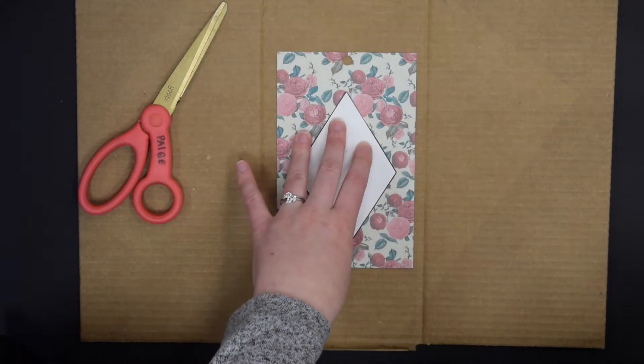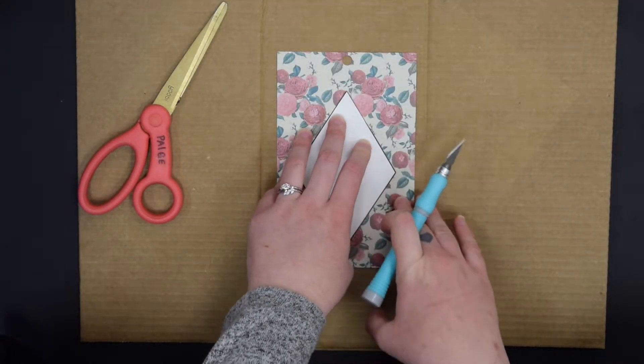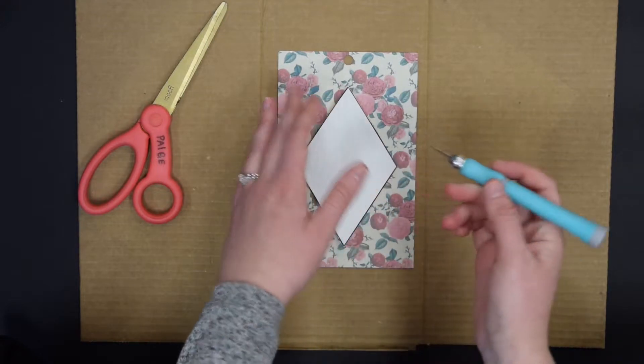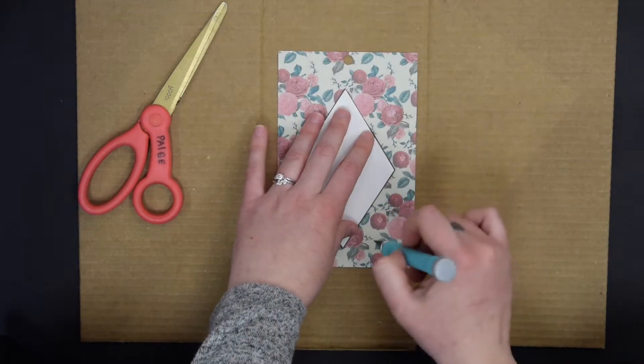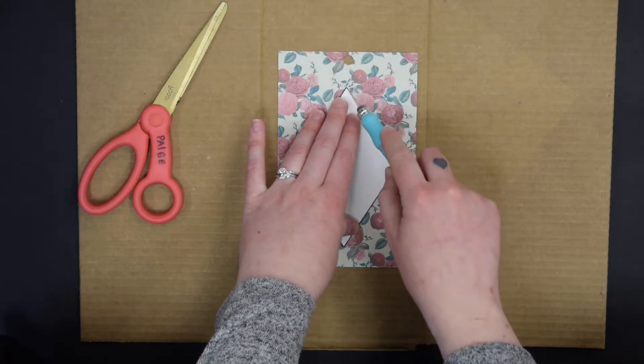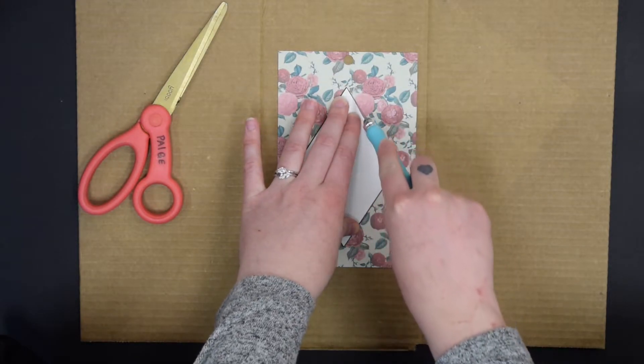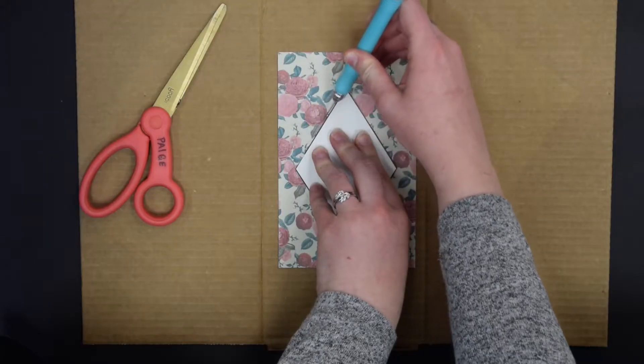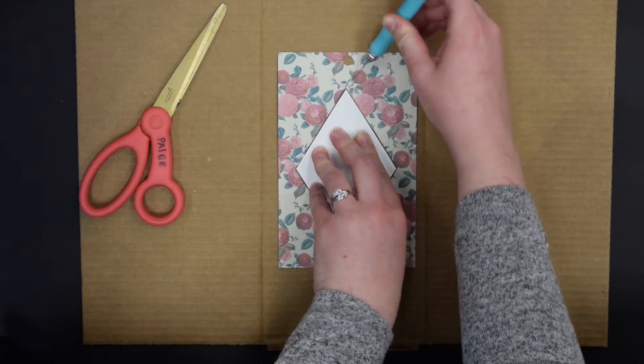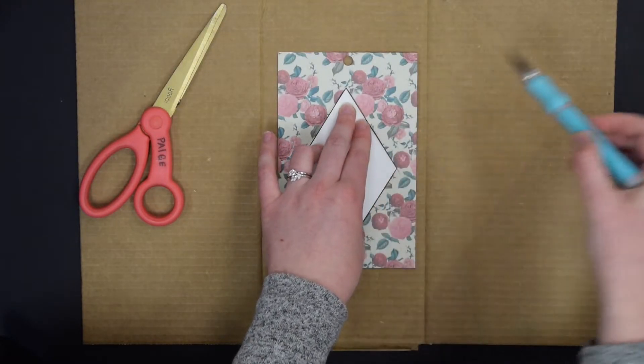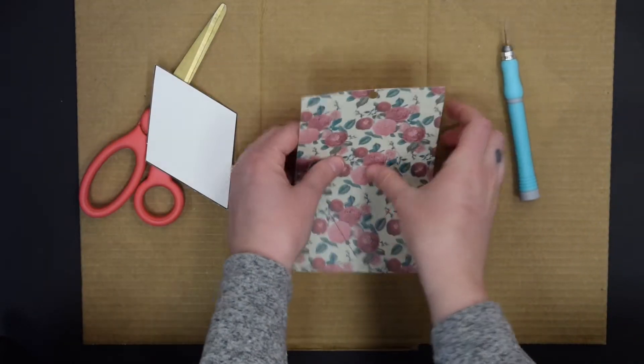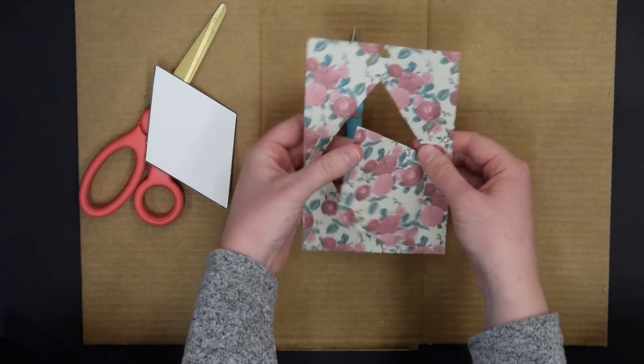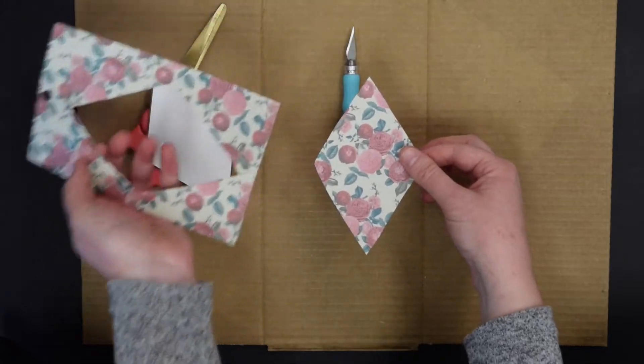To start this craft, you're going to take your paper of choice and we're going to start cutting out shapes. You can use either your scissors or your exacto knife to cut out the shape. The exacto knife will give you a more precise edge. There's our first shape.